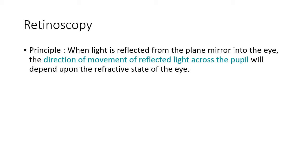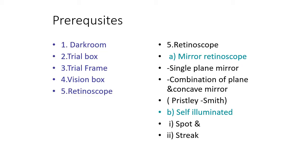The principle of retinoscopy: when light is reflected from a plane mirror into the eye, the direction of movement of reflected light across the pupil depends upon the refractive state of the eye. Prerequisites include a dark room, trial box, trial frame, vision box, and retinoscope.